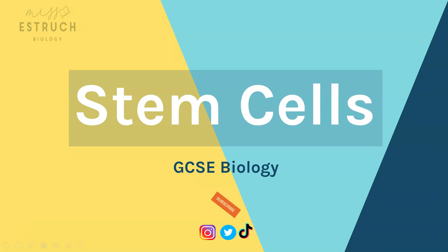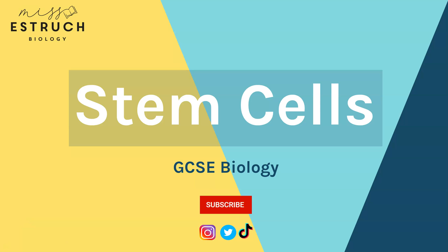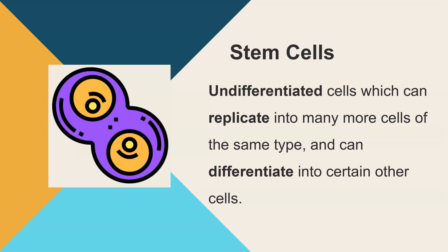Hello and welcome to Ms. Estric Biology. In this video we're going to go through stem cells for GCSE biology. So first of all, what do we mean by a stem cell? These are undifferentiated cells which have the ability to continually replicate into the same type of cell, but can also differentiate, which means to become a specialised cell.